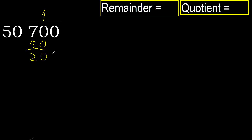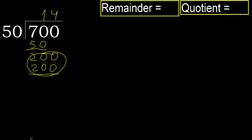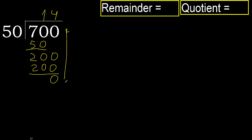Next: 200. 50 multiplied by 4 is 200, which is not greater. Subtract. There is no next number, therefore finish it.